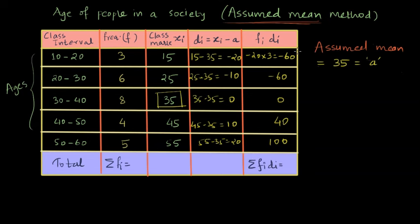So here the summation is minus 60 minus 60. Summation fi di is equal to minus 60 minus 60 plus zero plus 40 plus 100 and that gives me 20. Let me also sum up all the frequencies. The summation of all the frequencies is 9 plus 8, 17 plus 4, 21 and 21 plus 5 is 26.